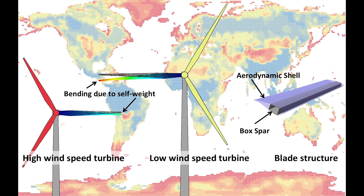But lower wind speeds means less energy. So to make up for this, low wind speed turbines have longer blades to reach more wind. But making the blades longer creates design challenges, which means they use more material and so they cost more.